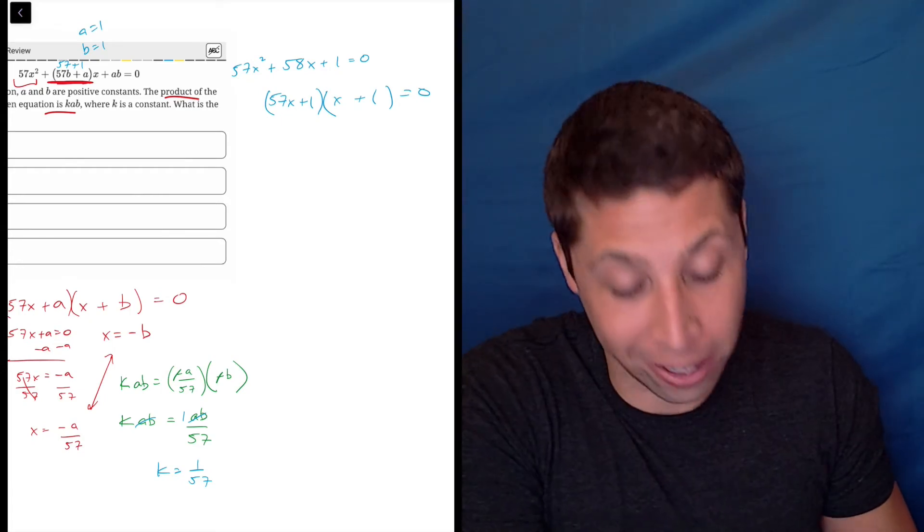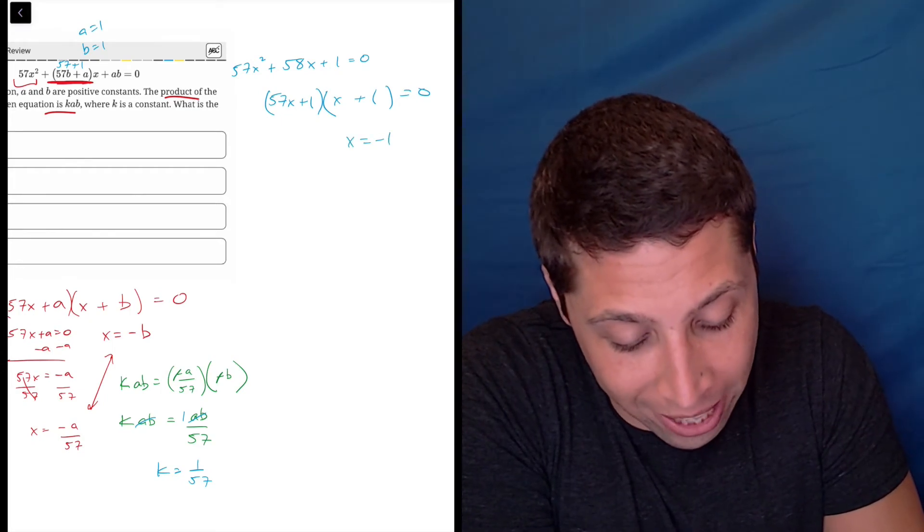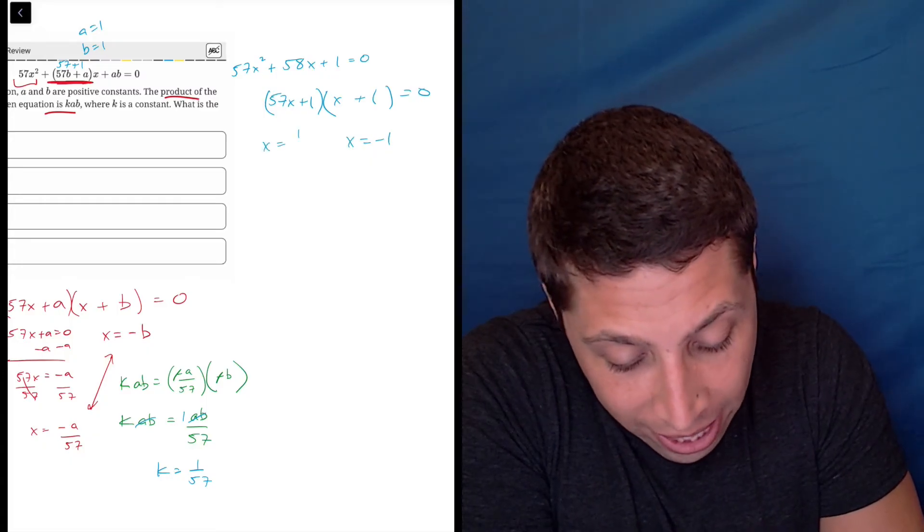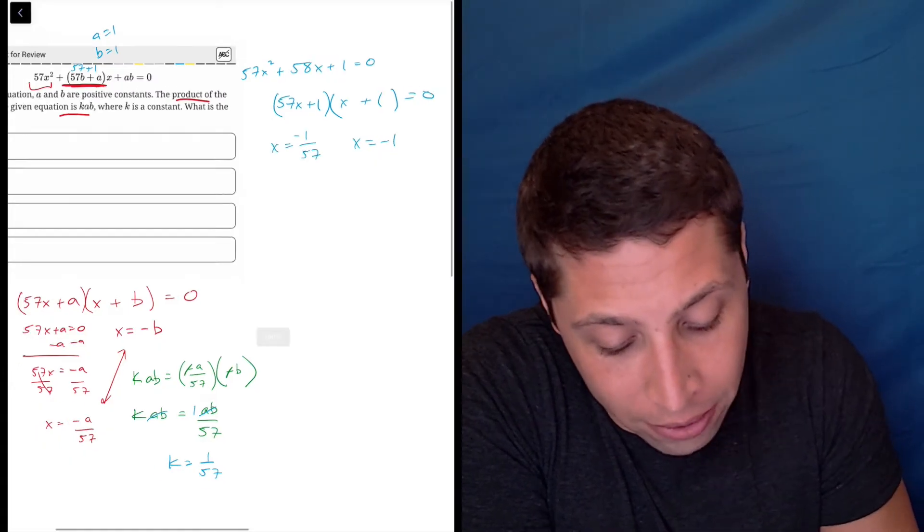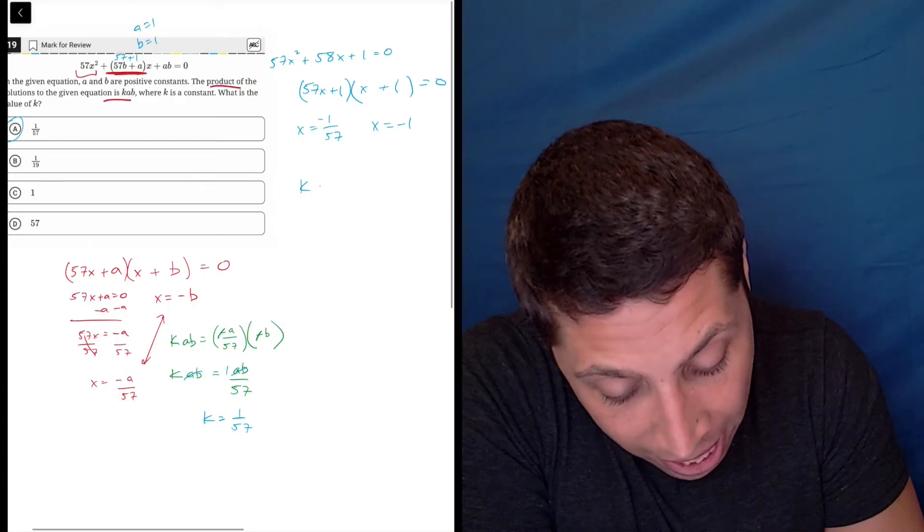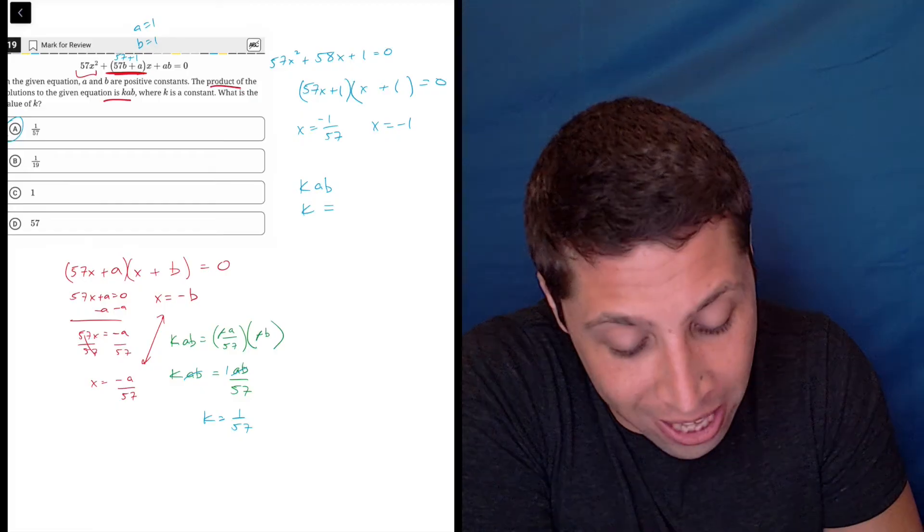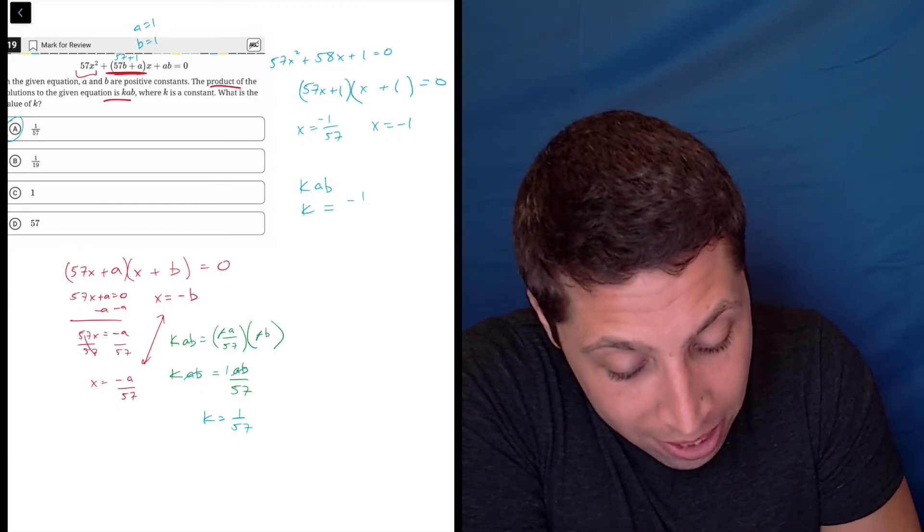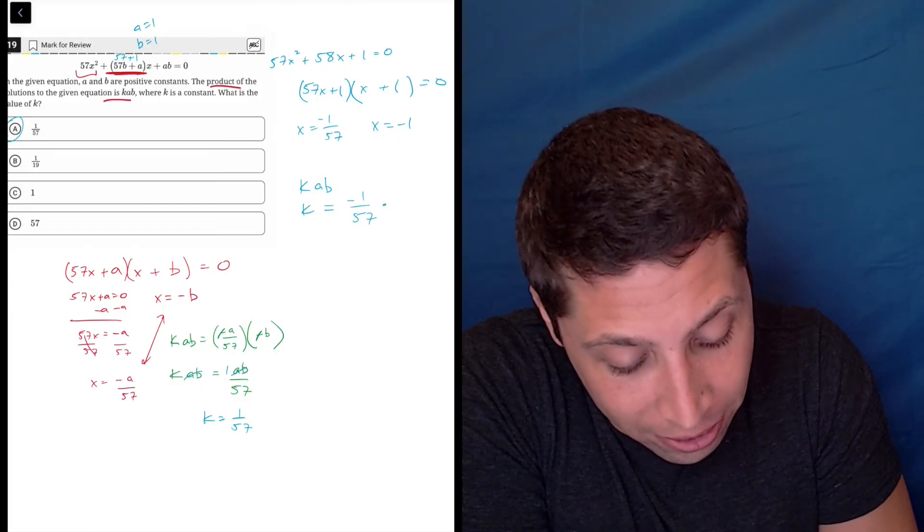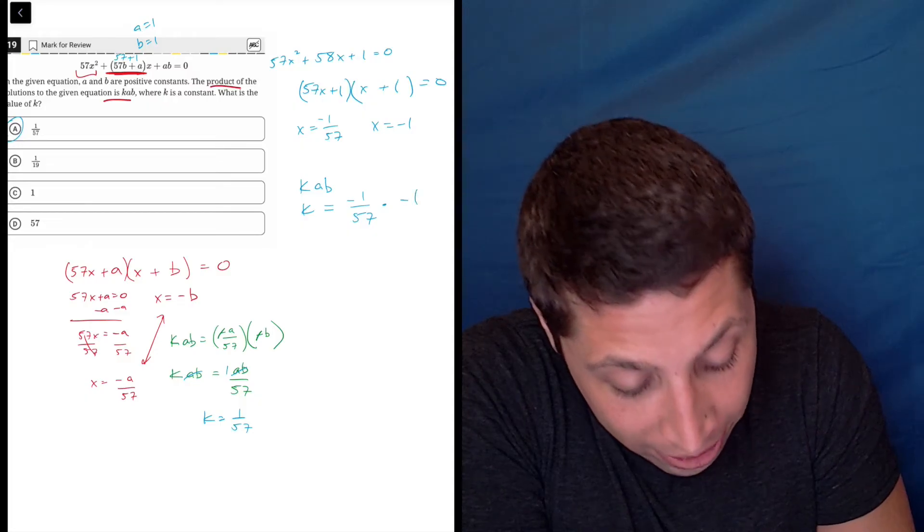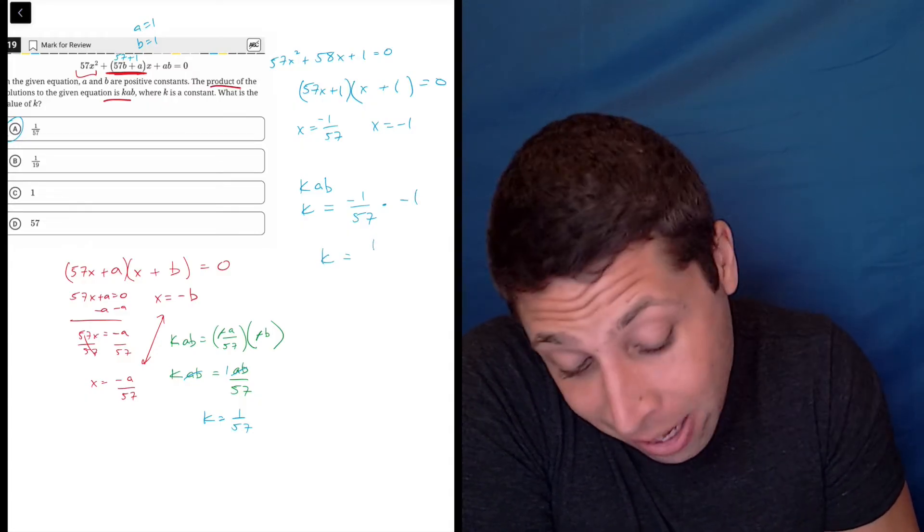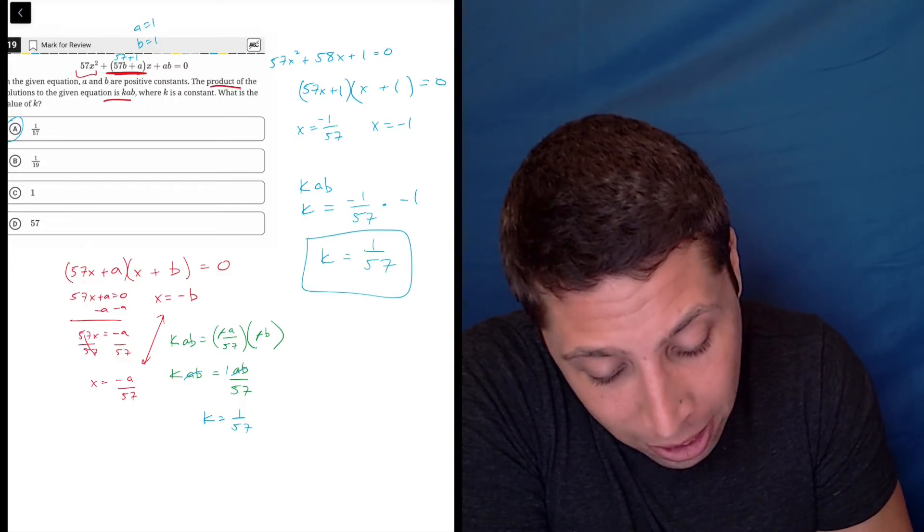So you can kind of trial and error it, but there you go. So this is going to be x is negative one, x is negative one over 57, and again, the product is k, a, b, which we now know is k times one times one. So that's just k is equal to negative one over 57 times negative one. So k is equal to one over 57. Yeah, arithmetize works here. Arithmetize.